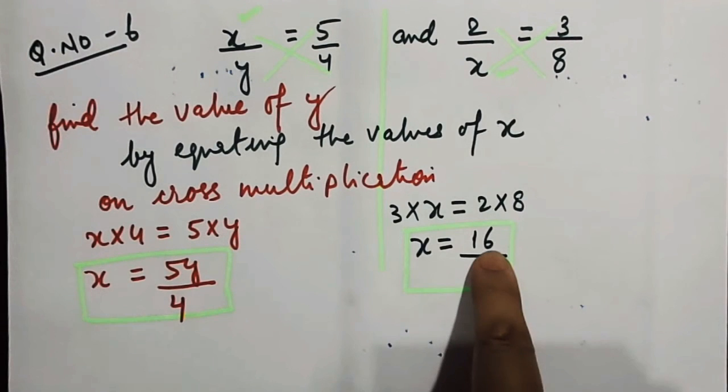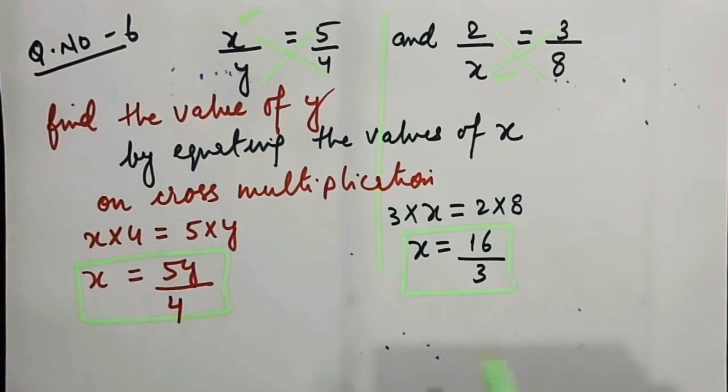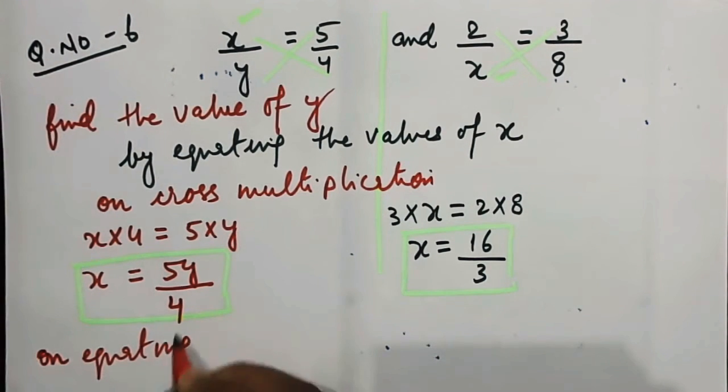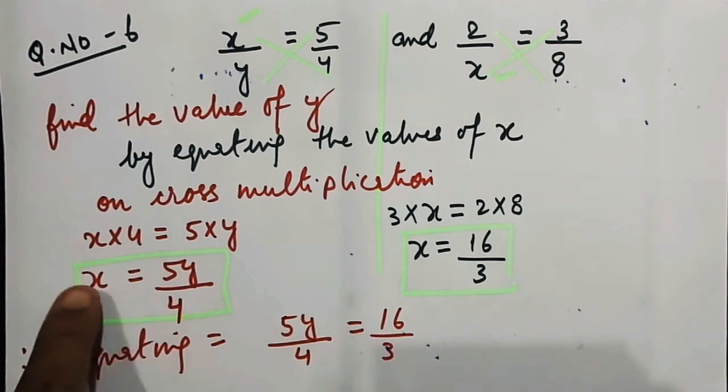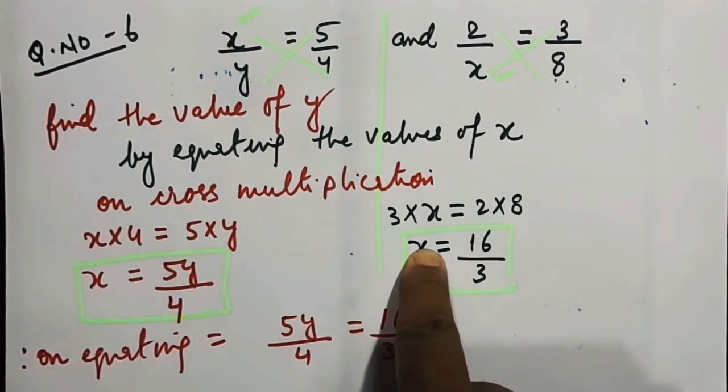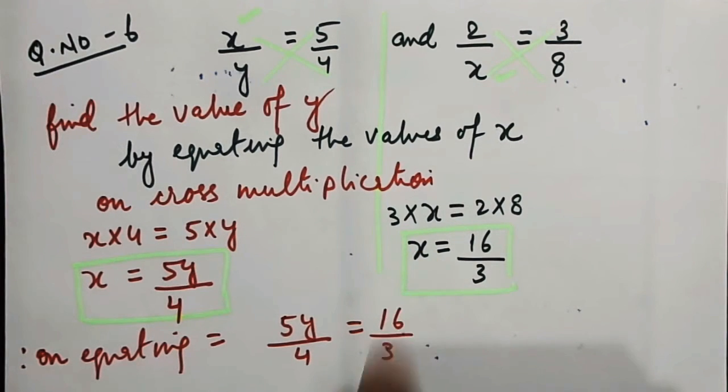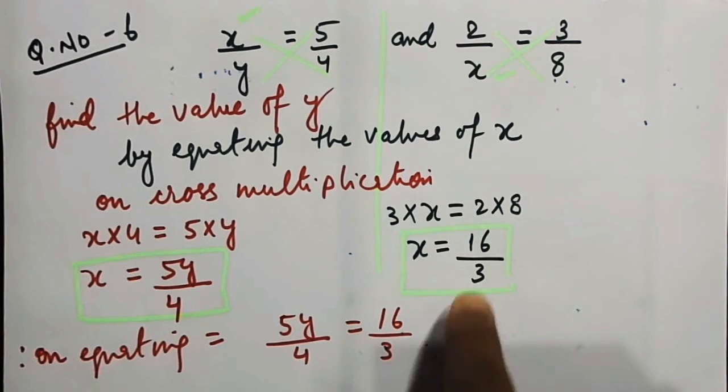Now x is equal to this, and x is equal to this. Therefore, on equating, 5y by 4 will be equal to 16 by 3. The value of x is here also, here also. Therefore 5y by 4 will be equal to 16 by 3.